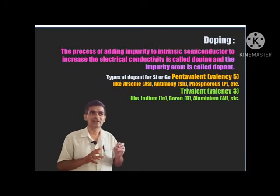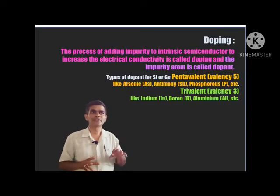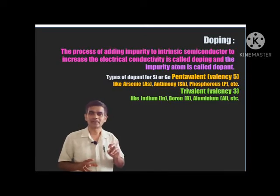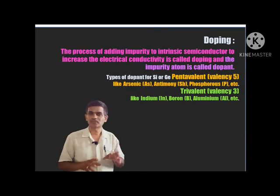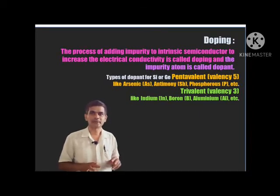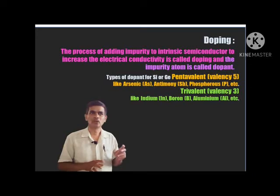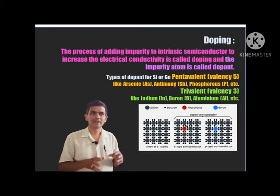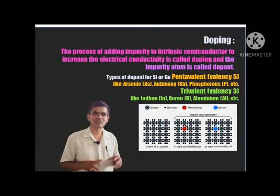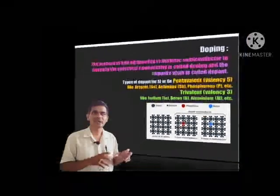There are two types of dopants used for silicon or germanium. One type is pentavalent — five valence electron atoms — such as arsenic, antimony, phosphorus, etc. Another type is trivalent — three valence electron atoms — such as indium, boron, aluminum, etc. Depending on which type of impurity atom is added, there are two types of extrinsic semiconductors: N-type and P-type.